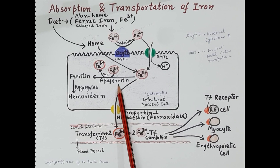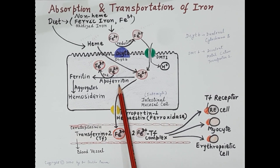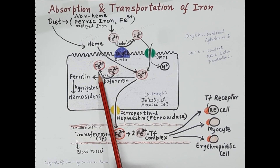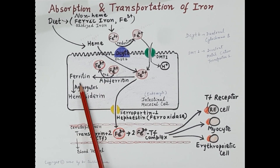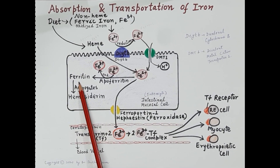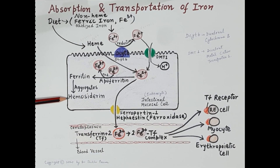Apoferritin is a protein present in the intestinal mucosa. This apoferritin oxidizes ferrous iron into ferric iron, and then apoferritin binds to the iron so that iron is stored as ferritin. A number of ferritin molecules aggregate to produce hemosiderin. So ferritin and hemosiderin are the storage forms of iron, and this is how iron is stored in the intestinal mucosal cells.